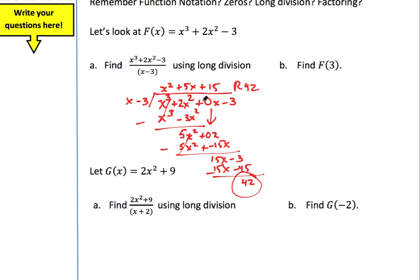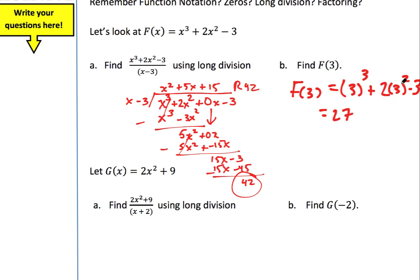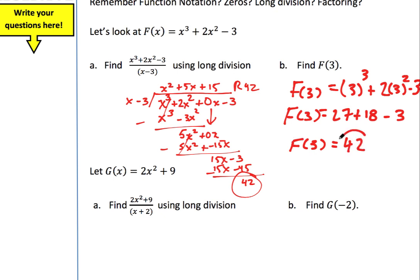So here's how my long division looked. I picked an example where you had to remember to include 0x, because we don't have an x term in there. You get through it all and you get a remainder of 42. Now f of 3 is going to equal — always use parentheses — 3 to the third power plus 2 times 3 squared, then minus 3. This equals 27, since 3 squared is 9 and 9 times 2 is 18. Don't forget to follow your GEMDAS rules. We then subtract 3, so f of 3 equals 42. Oh my goodness — did you just notice something? 42 and 42. They're both the same.